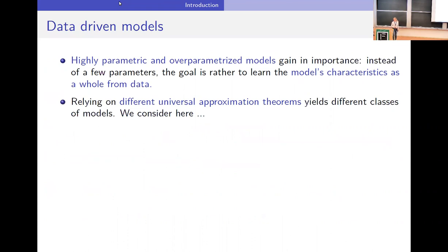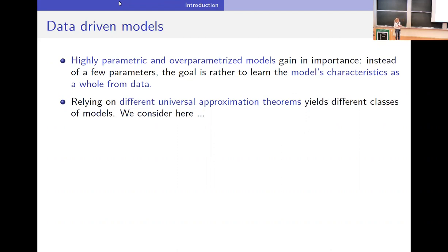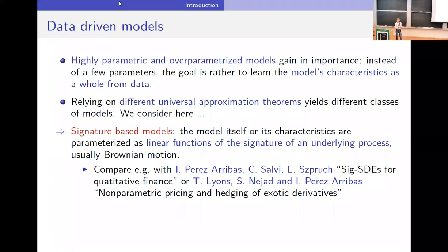In the introduction: we have seen a lot of data-driven models already today. As everybody knows, highly parametric and over-parameterized models gain more and more importance, and instead of learning just a few parameters, the goal is rather to learn the model's characteristics from data as a whole. This concerns in particular models used in mathematical finance. It depends on what kind of universal approximation theorem one relies on to get different kinds of models. What I consider here are signature-based models, meaning the model or its characteristics are parameterized as linear functions of the signature of some underlying process.